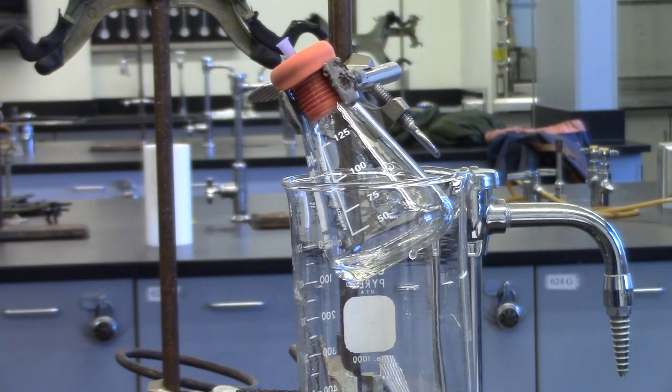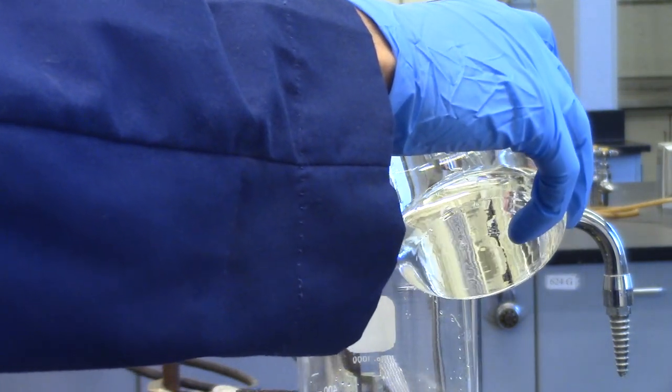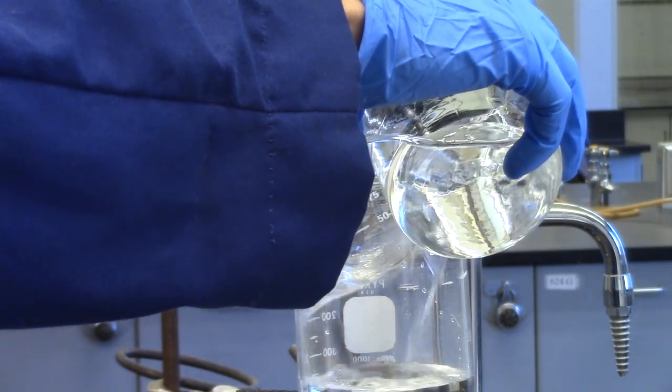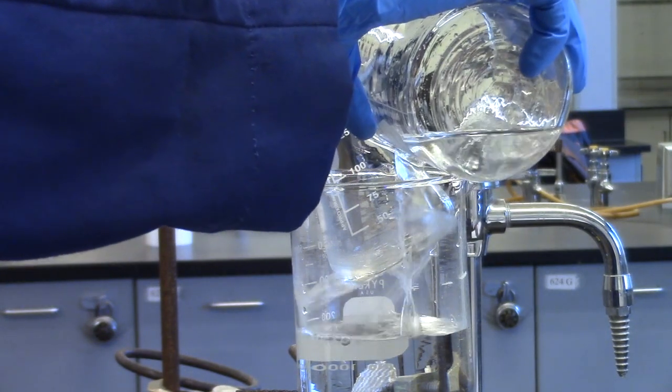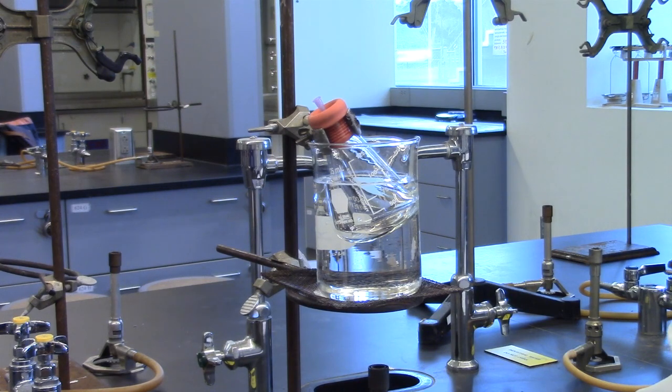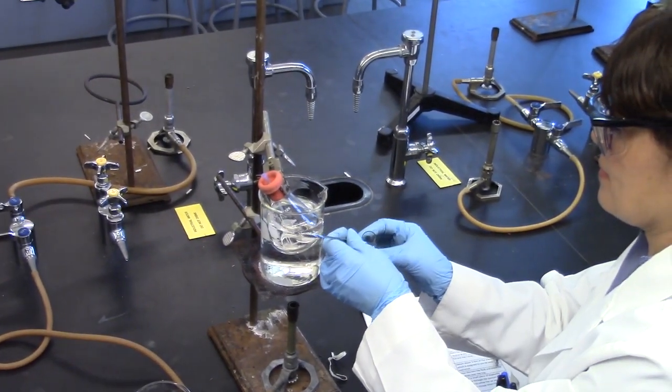Place the flask up to its neck in a large beaker about half to three-quarters full of water. See the illustration in the lab manual. Make sure to secure the clamps tightly. Add three to four boiling chips to the water in the beaker.